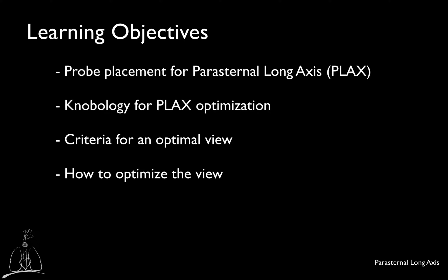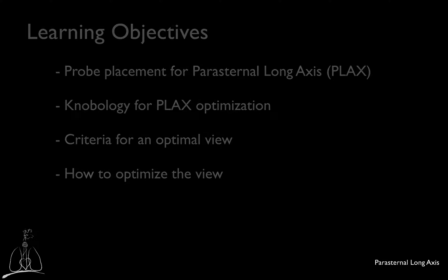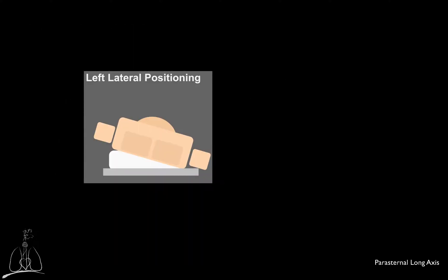Even in the intensive care unit, you should try to position the patient in left lateral decubitus unless there is a contraindication such as spine precautions, or when not appropriate in case of severe cardiovascular or respiratory instability. The goal is to shift the heart laterally. Often positioning a wedge or a pillow underneath the right side is necessary to support this position.